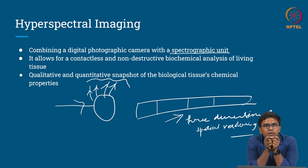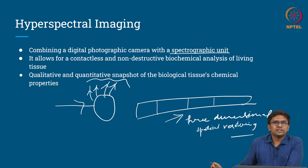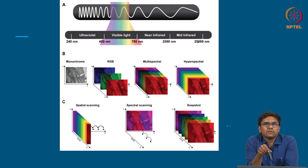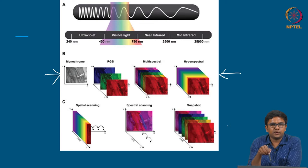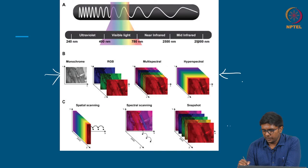They do qualitative and quantitative snapshots of biological tissues' chemical properties. The total electromagnetic spectrum includes UV, visible light, infrared, and mid-infrared. The dataset derived with the help of different image-capturing technologies includes monochrome, trichrome, RGB, multispectral, and hyperspectral. The dataset obtained from hyperspectral imaging is called a hypercube.